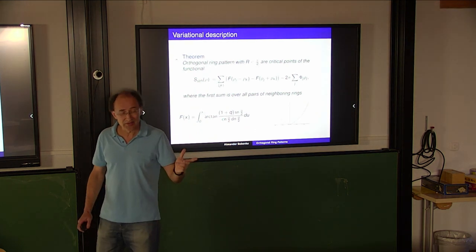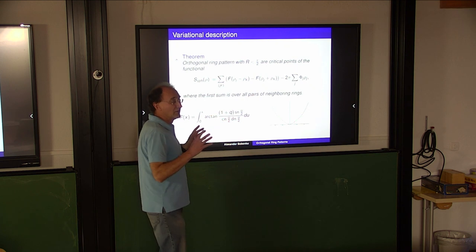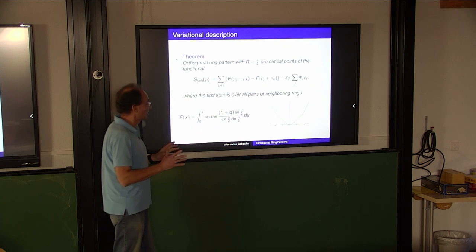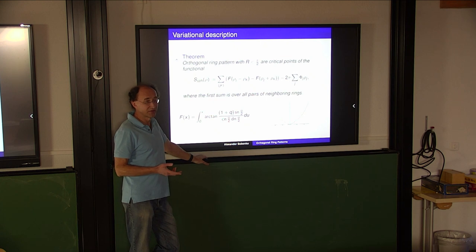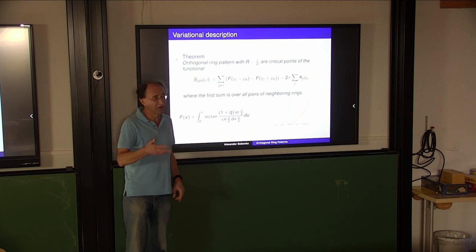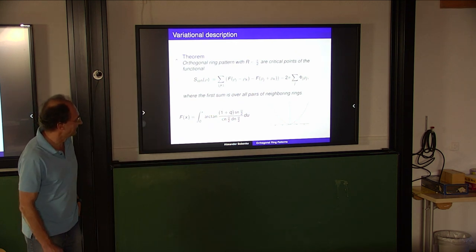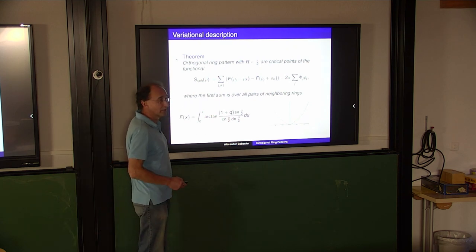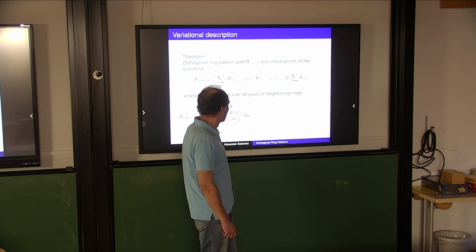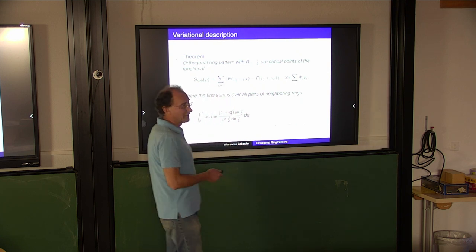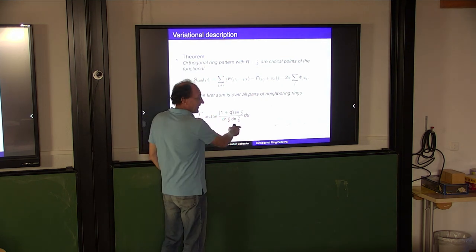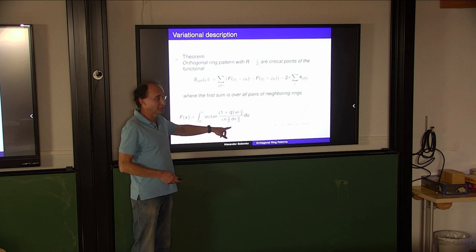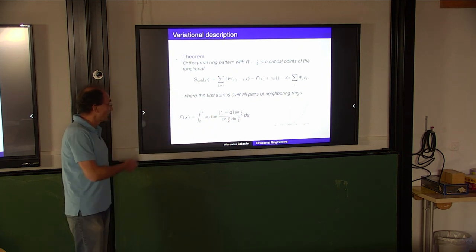I think it's an interesting functional. The first sum is taken over all pairs of neighboring rings - a sum over edges. Here you have the sum over vertices. Essentially it's an integral of the function we had before, and this is a convex function. Now it's interesting to look at what this function becomes in the circle pattern limit when q goes to 1. This function will be given in terms of dilogarithms in the circle pattern limit. So in this way it's a sort of elliptic generalization of dilogarithms. Is it the same as the q-deformation of dilogarithms? That I don't know - probably one should compute the power series at zero and compare.